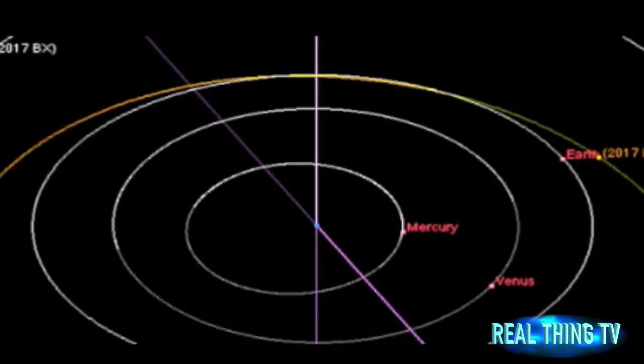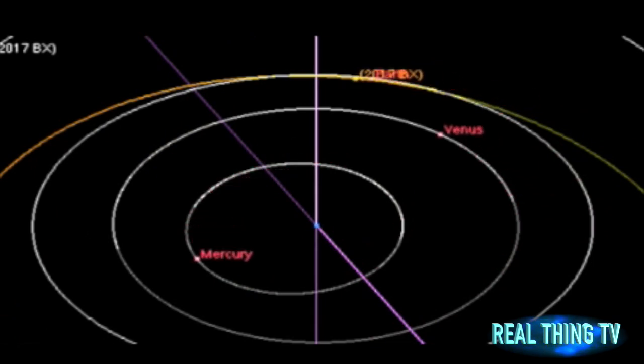You can see the orbit of the asteroid, as projected by the near-Earth object program at NASA's Jet Propulsion Laboratory.